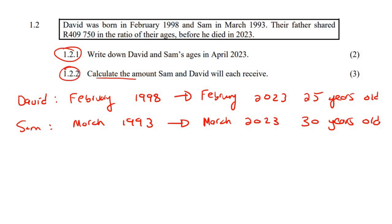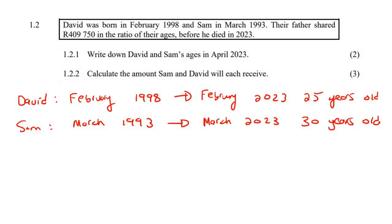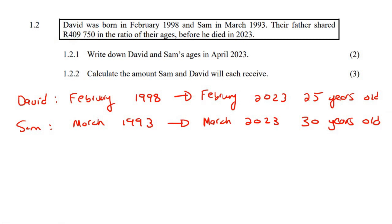The next question says: calculate the amount that Sam and David will each receive. So let's recall how to divide a number into ratios.